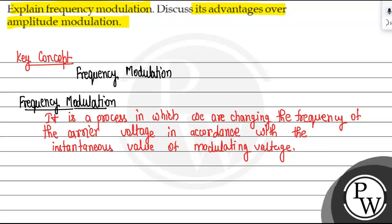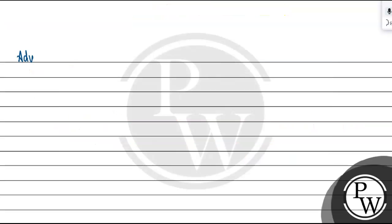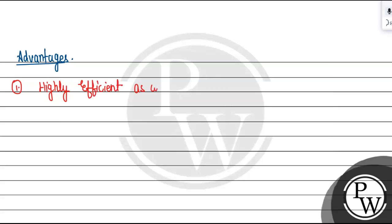Now we have the question: what is the advantage over amplitude modulation? The first advantage is that frequency modulation is highly efficient as compared to AM modulation.